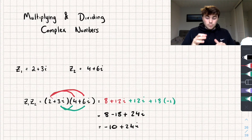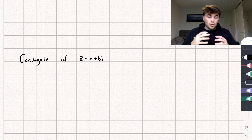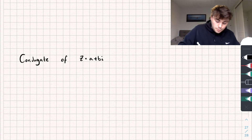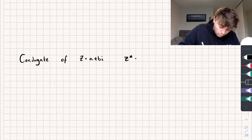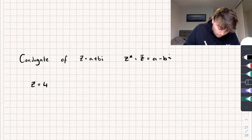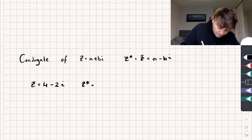Before we look at division, we need to look at something called the complex conjugate. Say we've got a general complex number z of the form a plus bi, then its conjugate — written as z star, or sometimes z bar — is equal to a minus bi. So say we have z equal to 4 minus 2i; its conjugate z star is going to be equal to 4 plus 2i.